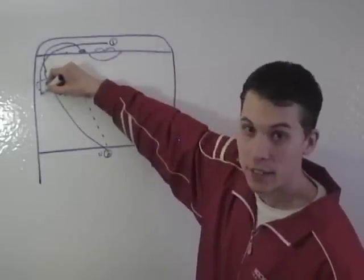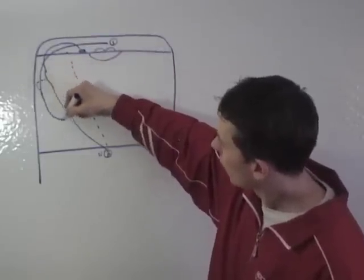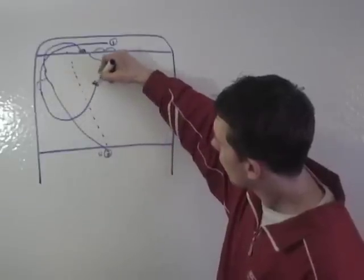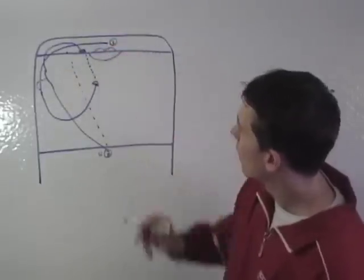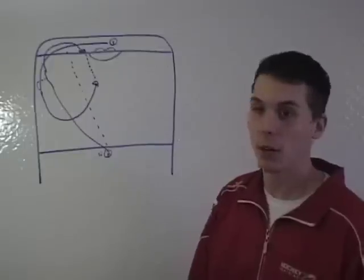This first player is going to keep his feet moving, come all the way around the top of the circles and drive the slot, getting a pass from the second player and taking a quick shot on net.